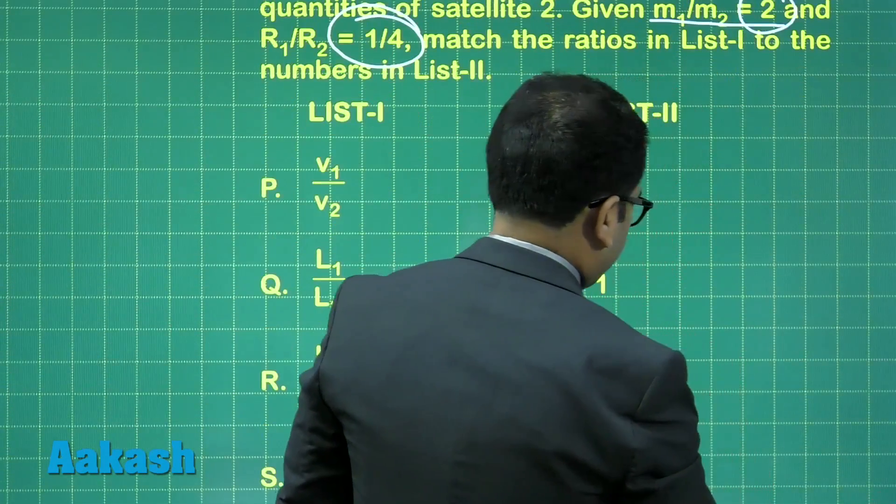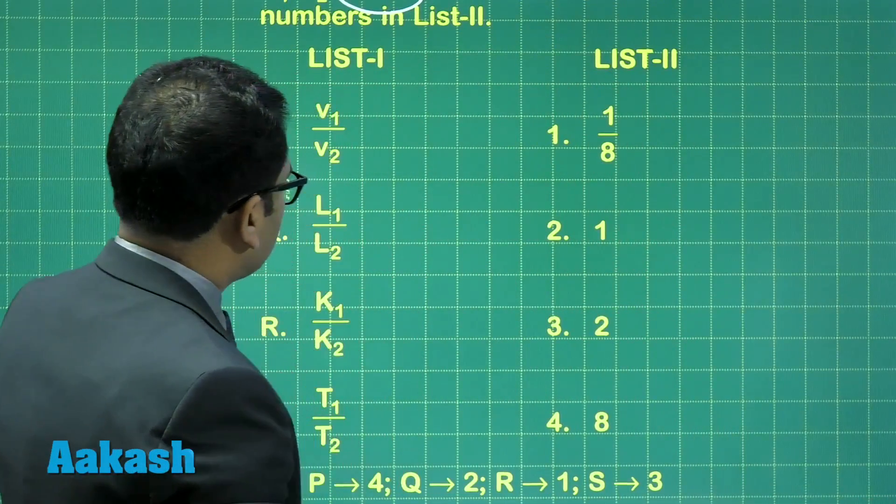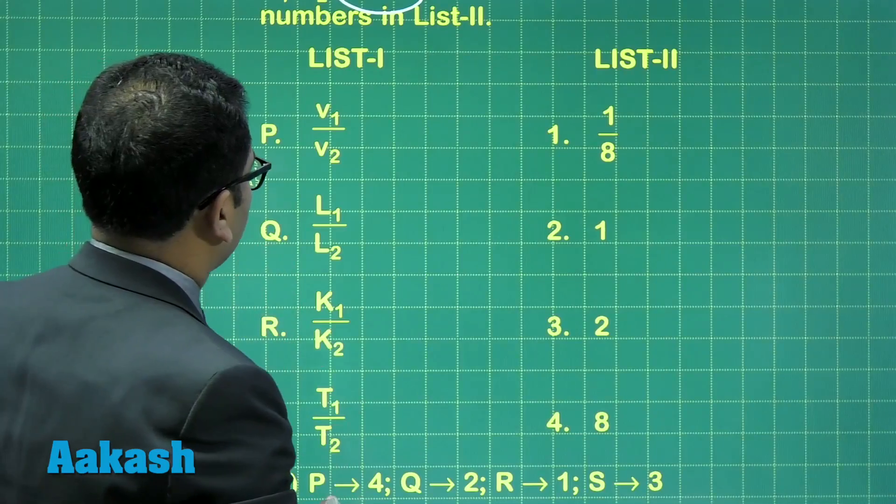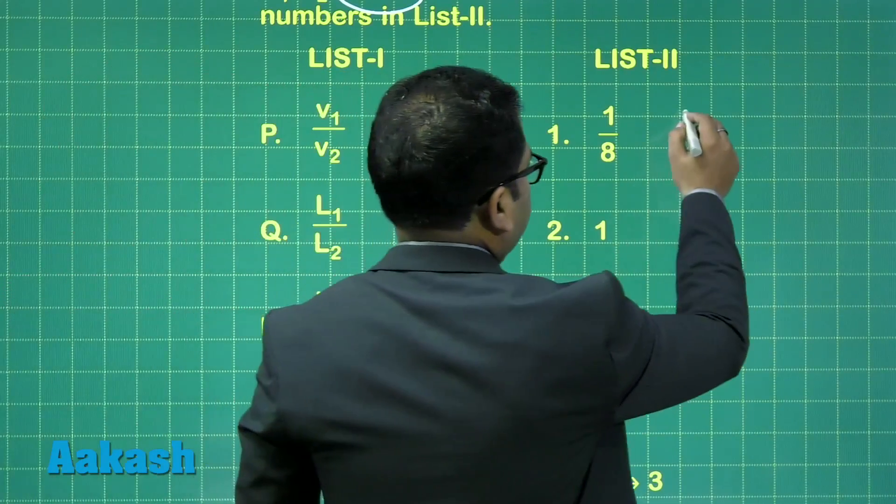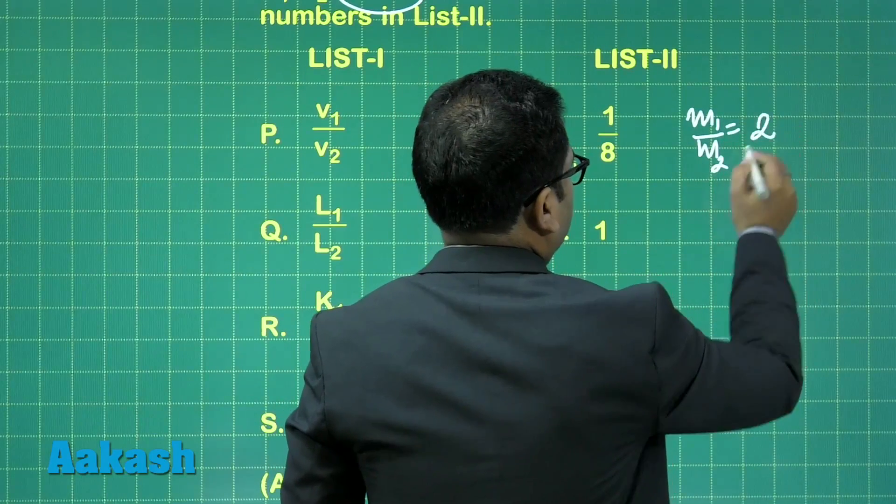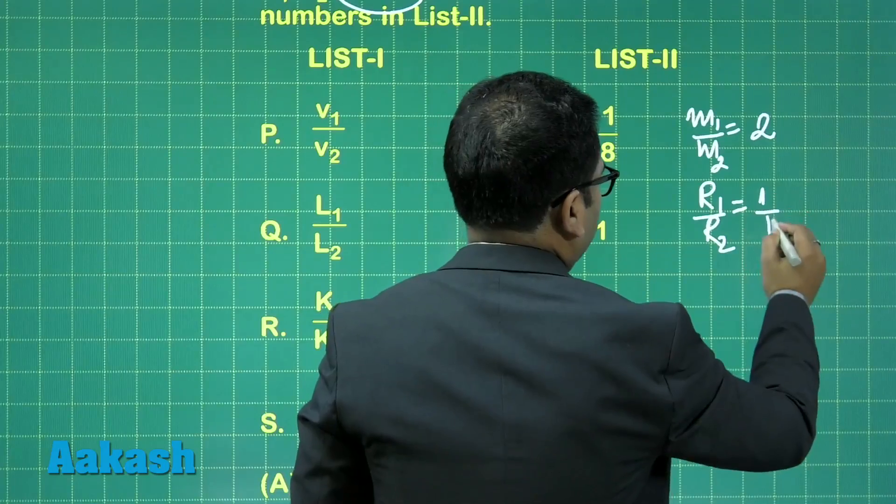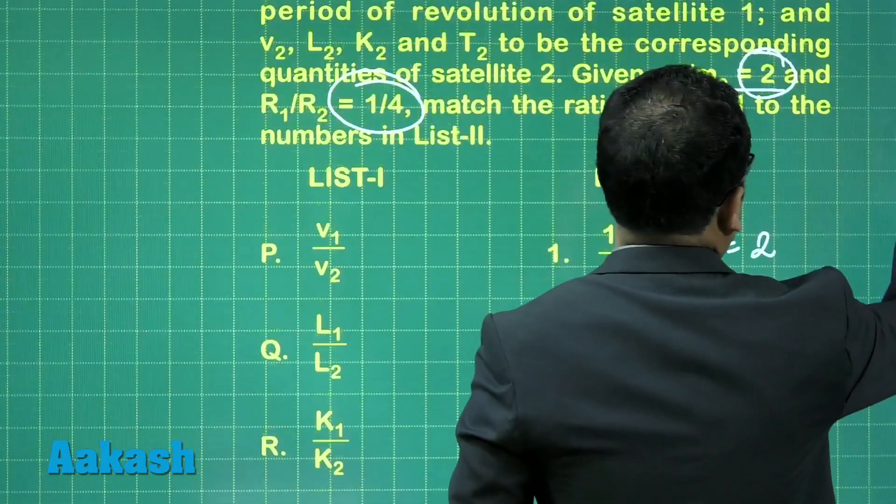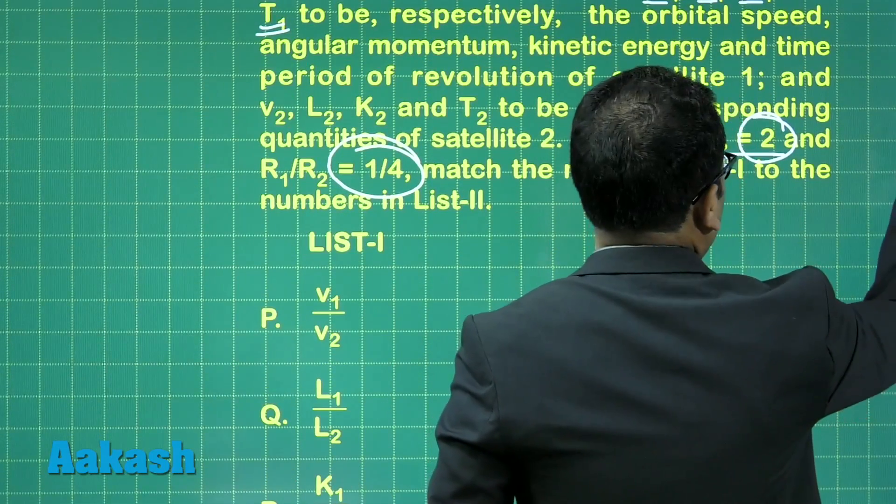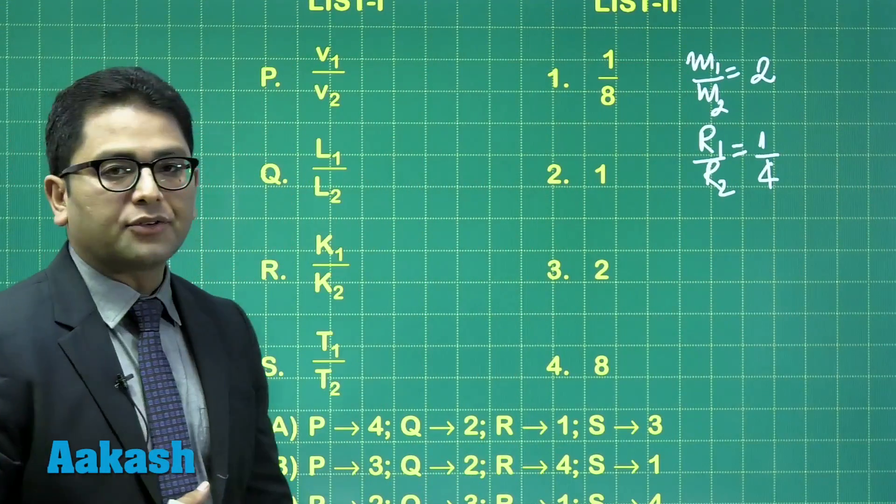Let's calculate the speed ratio first. M1/M2 = 2 and R1/R2 = 1/4. For V1 to V2, the orbital speed is inversely proportional to the square root of radius, because V = √(GM/R).